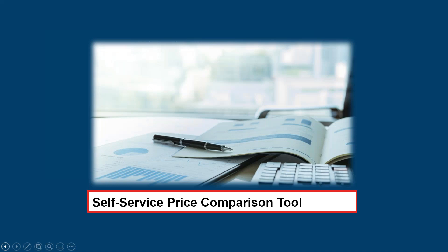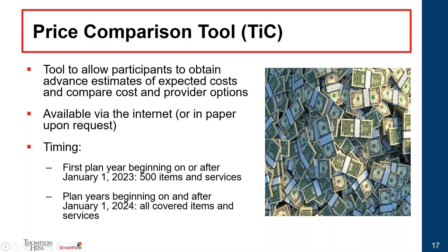Next, we'll discuss the requirements for plans to provide a self-service price comparison tool. Prior to the CAA, the tri-agencies issued the Transparency and Coverage Regulations, which require plans to establish a tool effective January 1, 2023, allowing participants to get advanced explanations of benefits with advanced estimates of expected costs and the ability to compare costs and provider options. The information must be available via the internet or in paper form upon request. The Transparency and Coverage rules require the first disclosure to be available effective January 1, 2023 for 500 specific items and services, and then effective January 1, 2024, for all covered items and services under the plan.